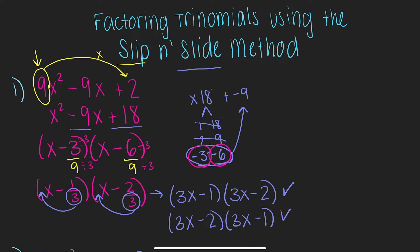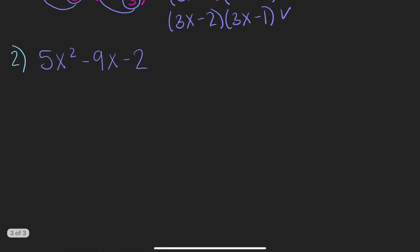multiplication is what they call commutative. So, if you got 3x minus 2 times 3x minus 1, that is also the correct answer. There is our first example of using the slip and slide method. Let's go ahead and try our second and last problem.